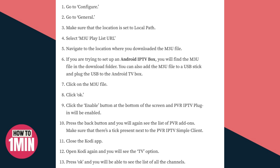Press the Back button and you will again see the list of PVR add-ons. Make sure there is a tick present next to the PVR IPTV Simple Client. Close the Kodi app, open Kodi again, and you will see the TV option. Press OK and you will be able to see the list of all the channels.